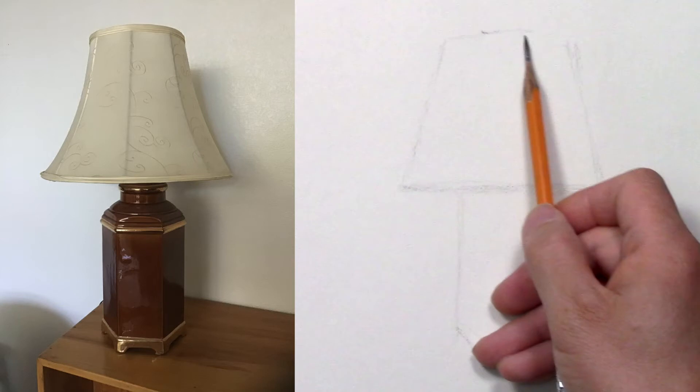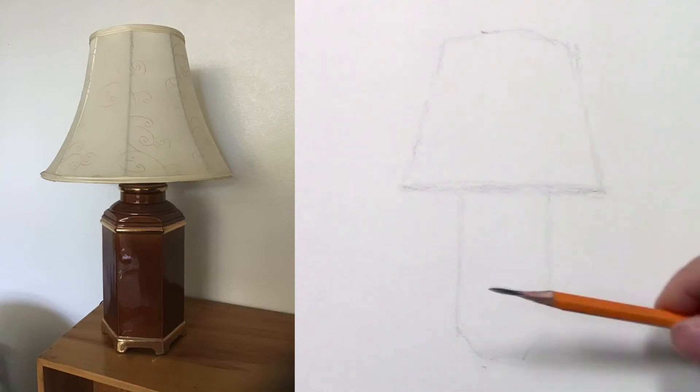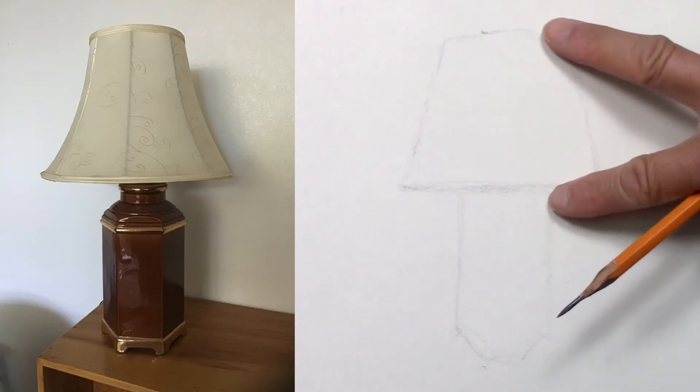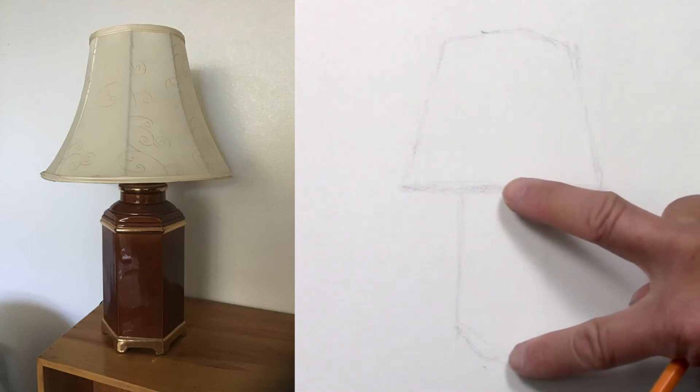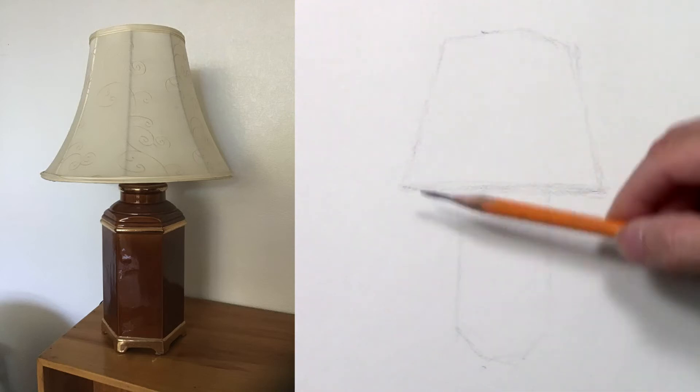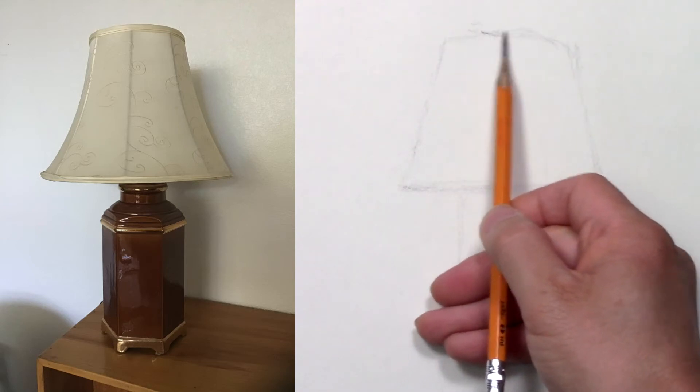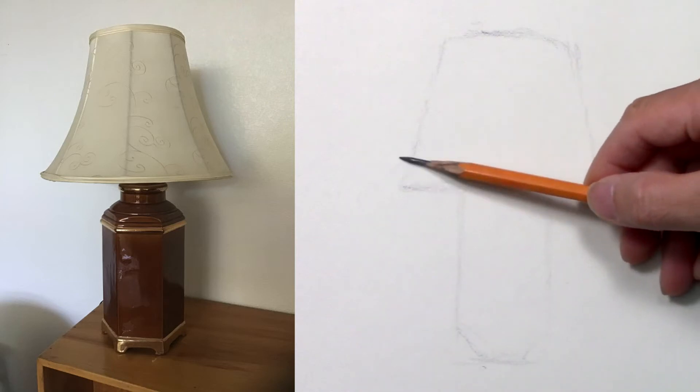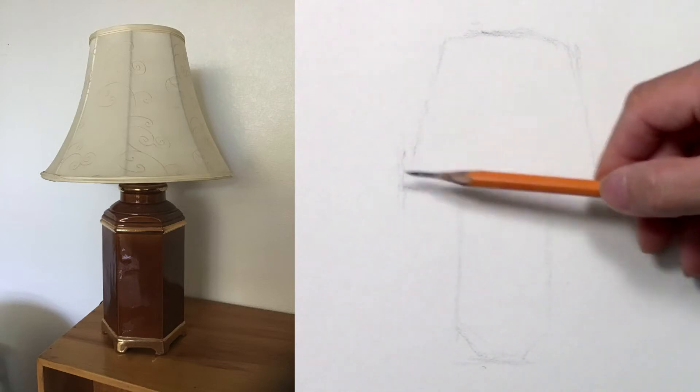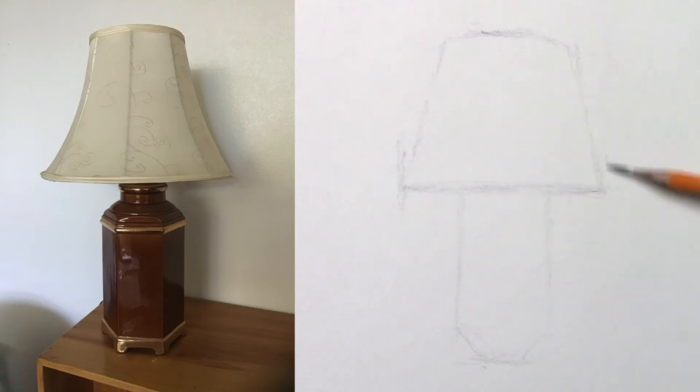So in this case, it's very simple. There are only two parts, top and bottom, width and height. So I place the top of the lamp, the bottom, and then the width on the left side and right side. And it's about the same size, top and bottom.